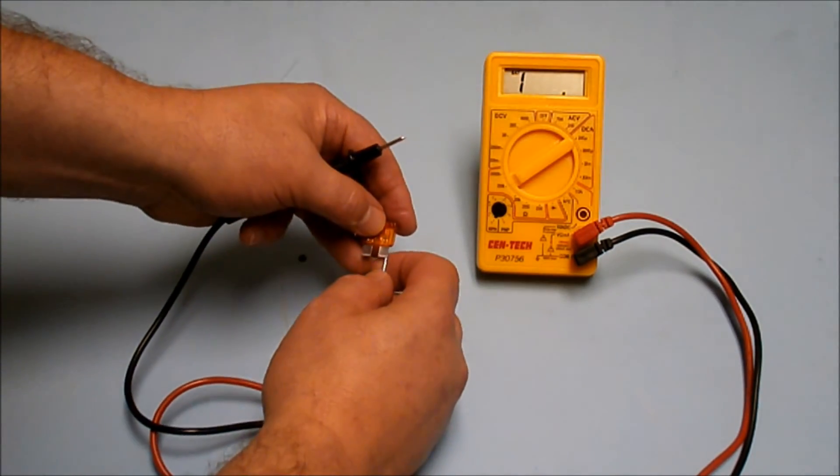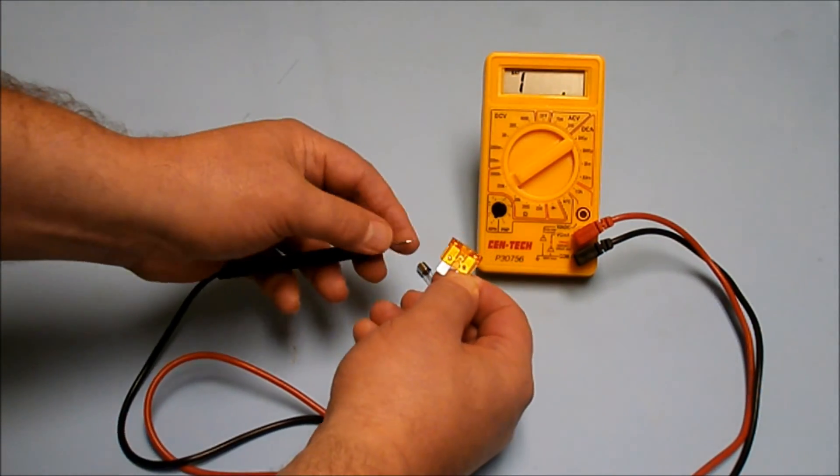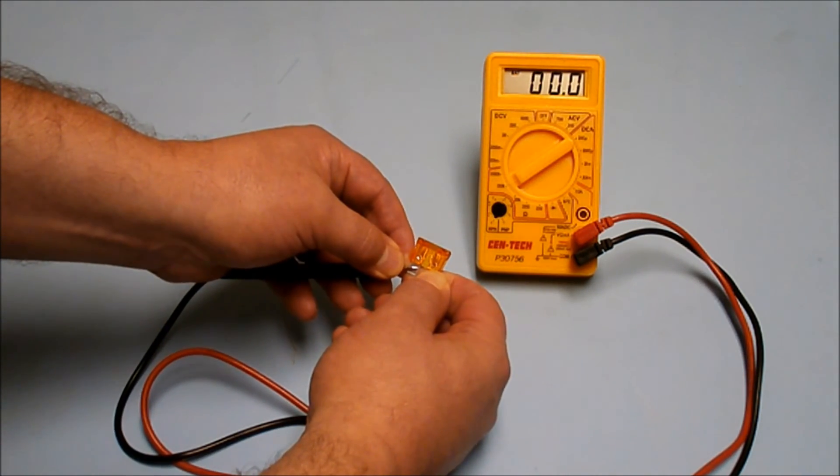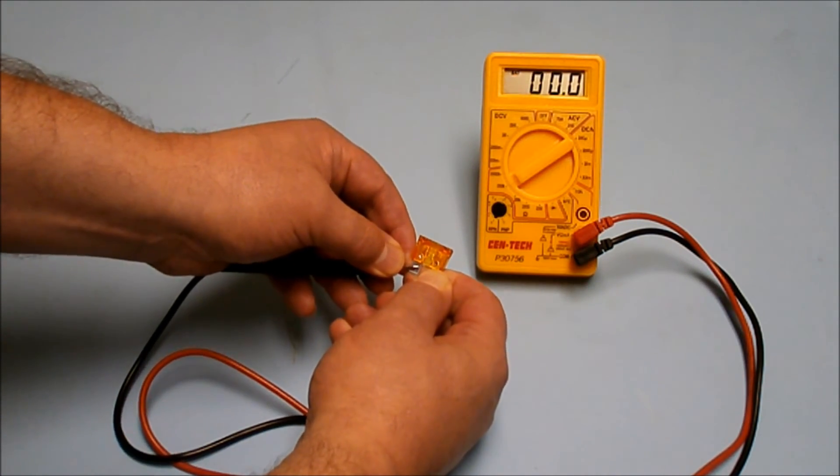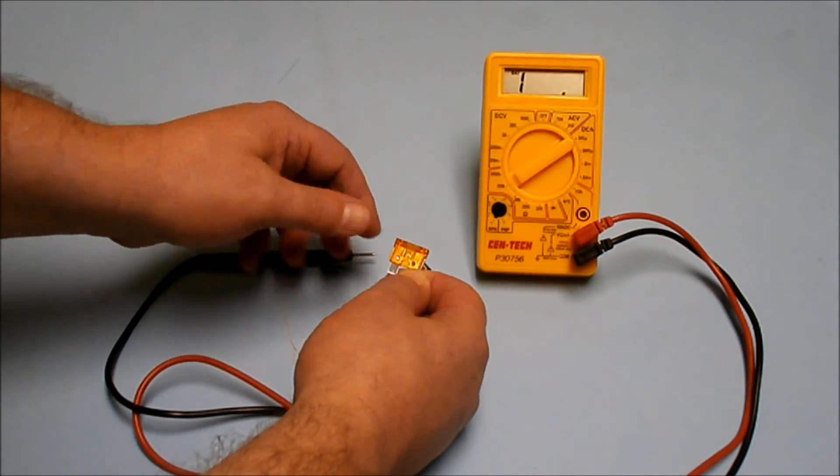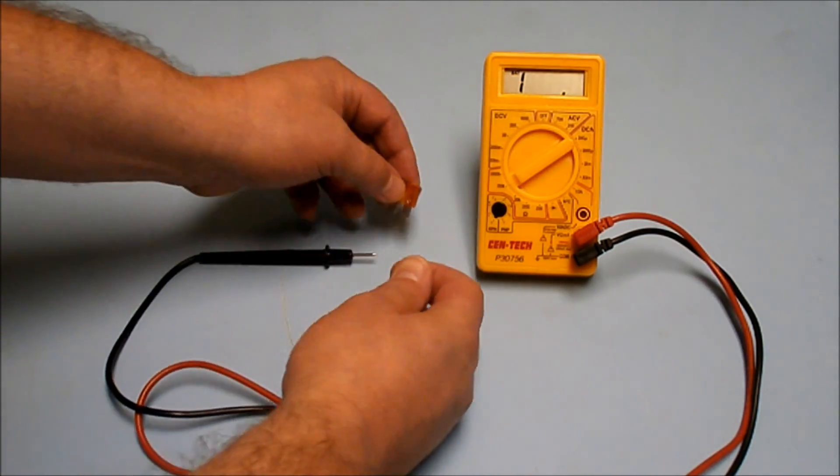Here's a blade fuse, pretty much the same thing. Multimeter to one post, the other multimeter lead to the other post. You can see we have zero resistance on this fuse, so it's a good fuse. And again, if it showed infinite resistance, then the fuse would be blown.